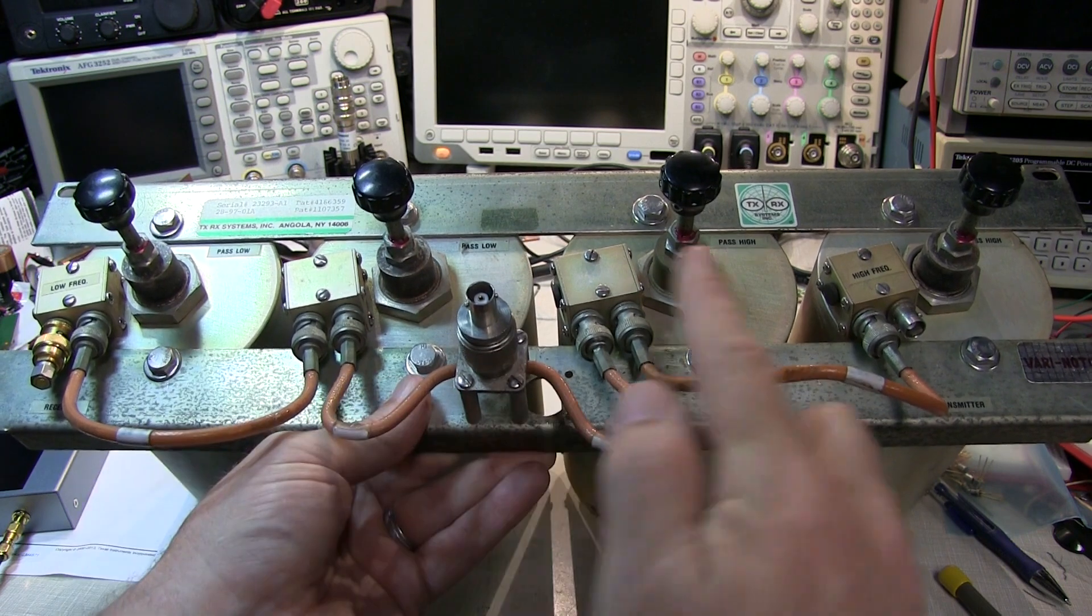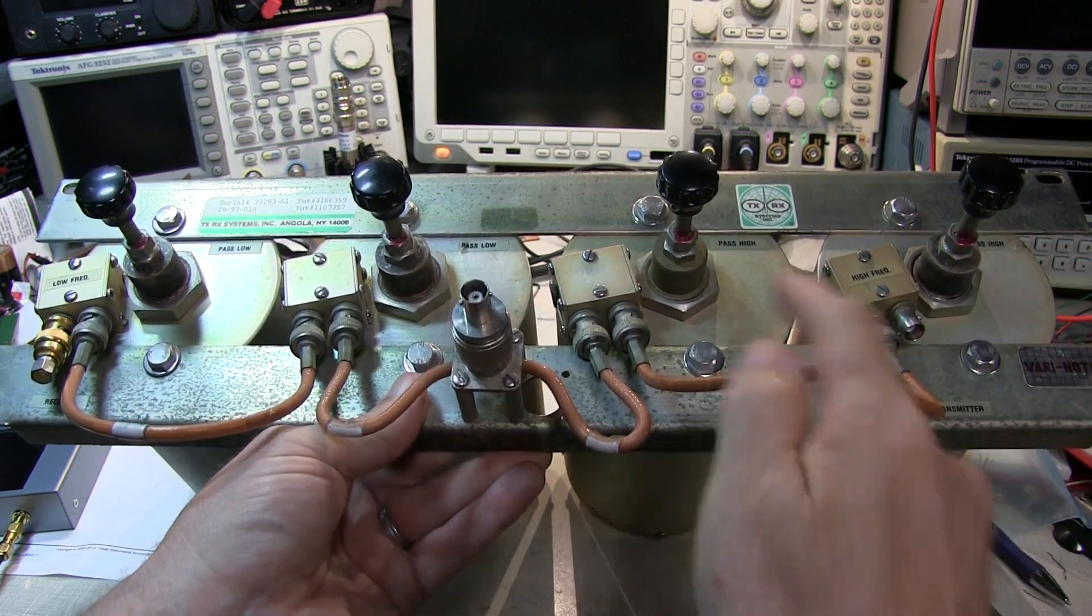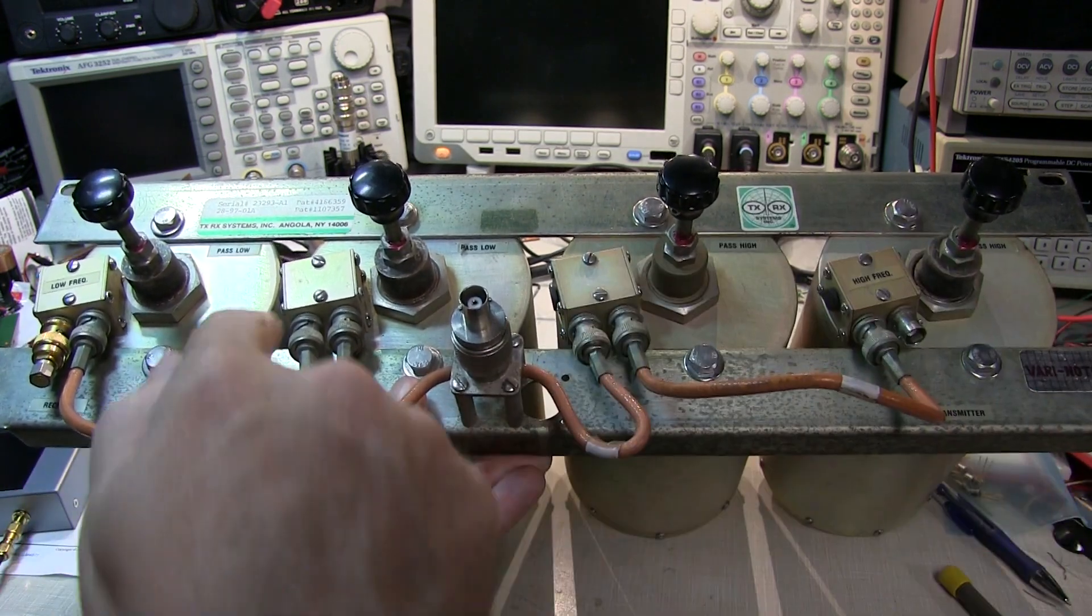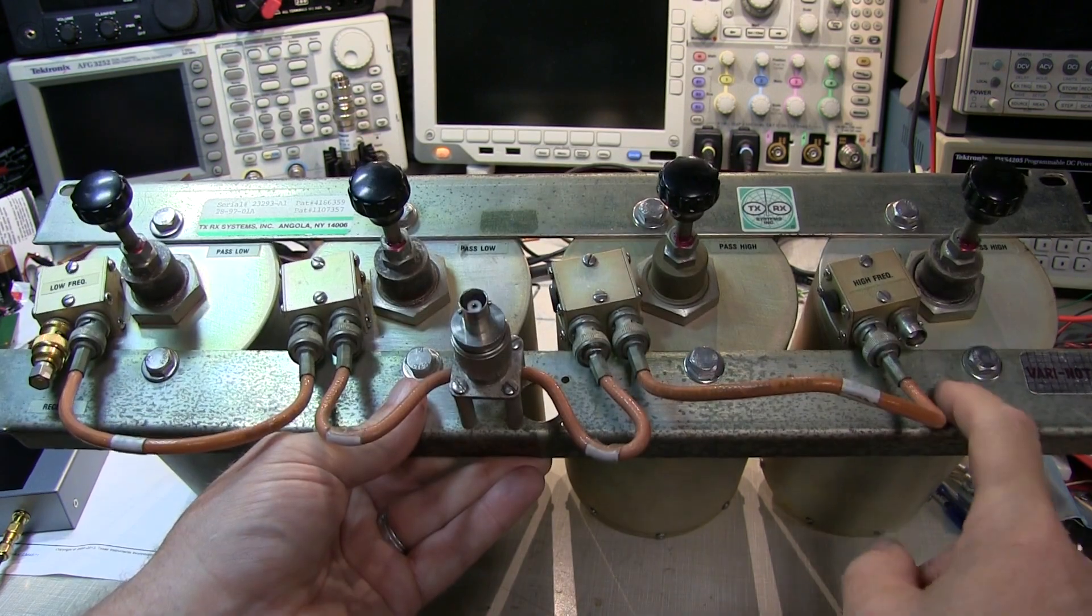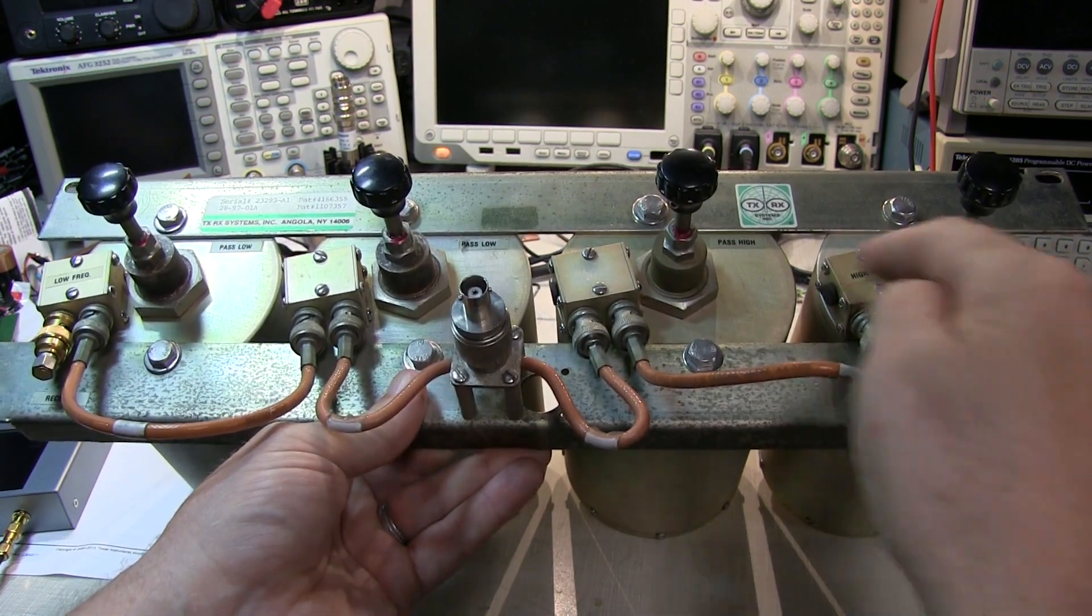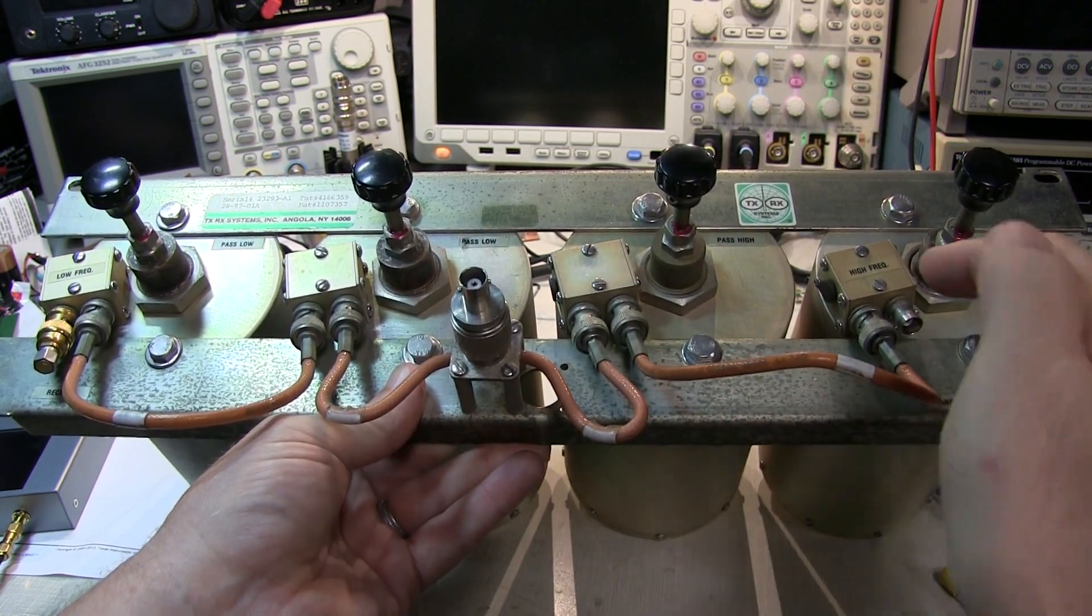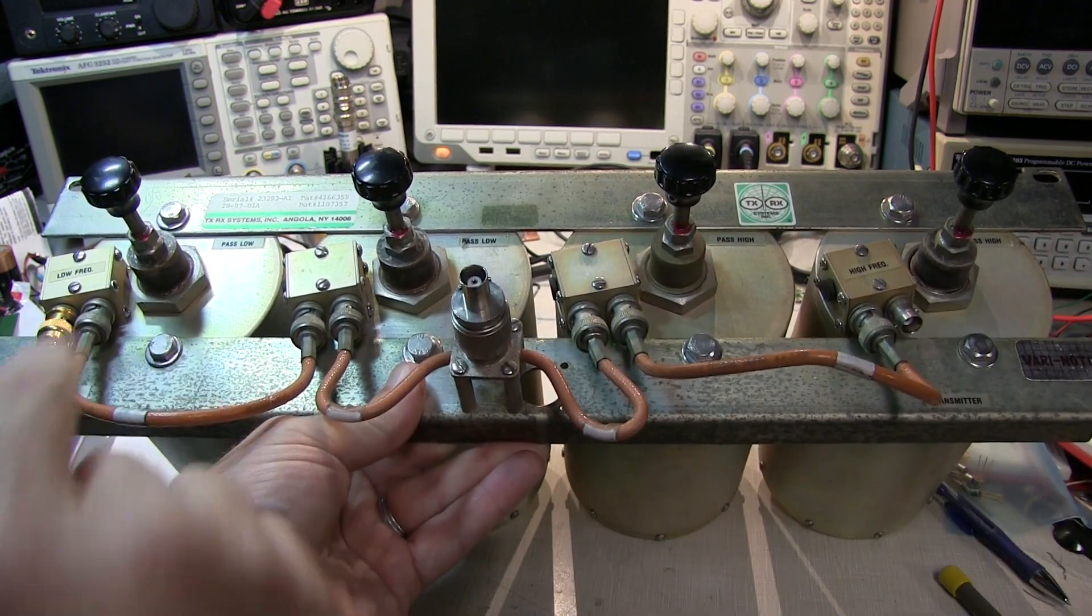While it might look like there are just four filters here, there's actually eight. The large cans are bandpass filters and the smaller rectangular blocks are adjustments for notch filters. On the transmit side, the bandpass filters pass the transmit frequency while the notch filters notch out the receive frequency.